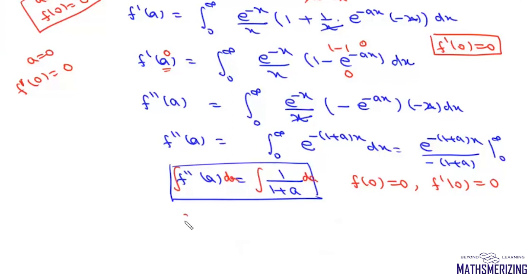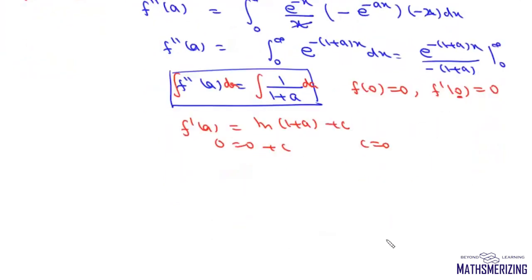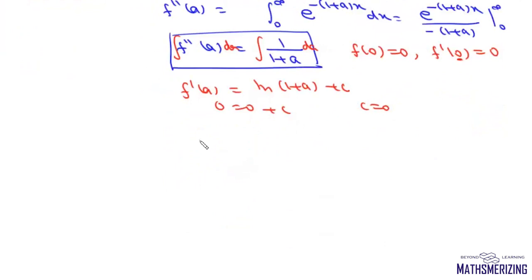Now we'll integrate this function with respect to a. So we'll get F'(a) equals log(1 plus a) plus c. And if a is zero, F' is zero, so this will be zero plus c — that means the value of c is zero. So we can write F'(a) as log(1 plus a).